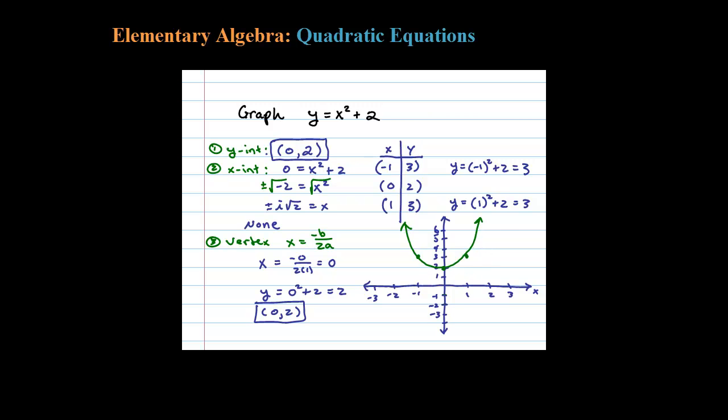Notice the math told us that, right? We got an imaginary x-intercept, so it's telling me no x-intercepts in this case. So there it is: y equals x squared plus 2.